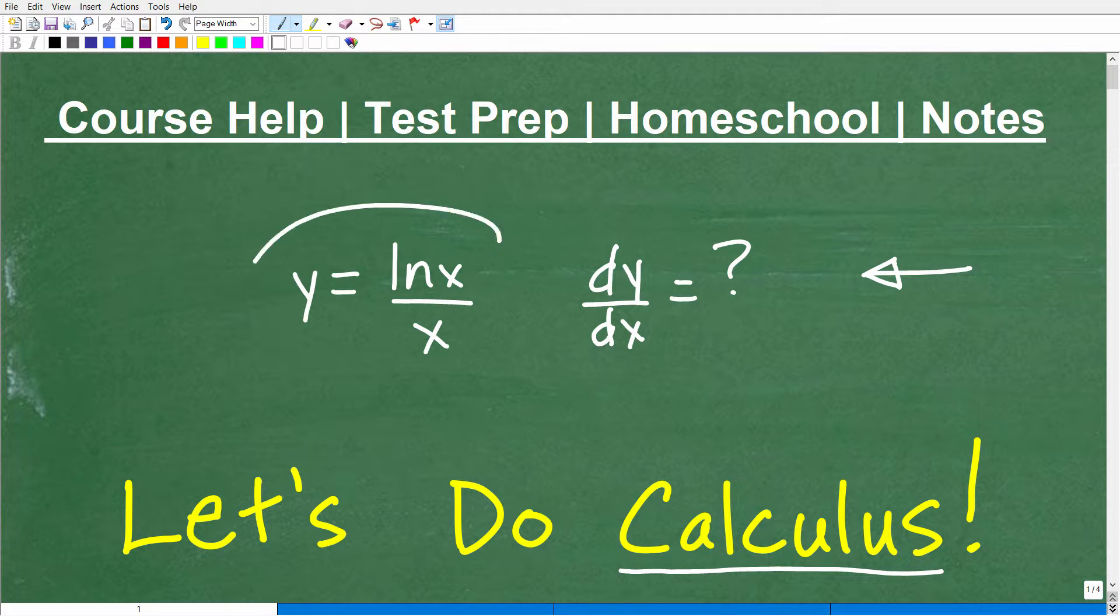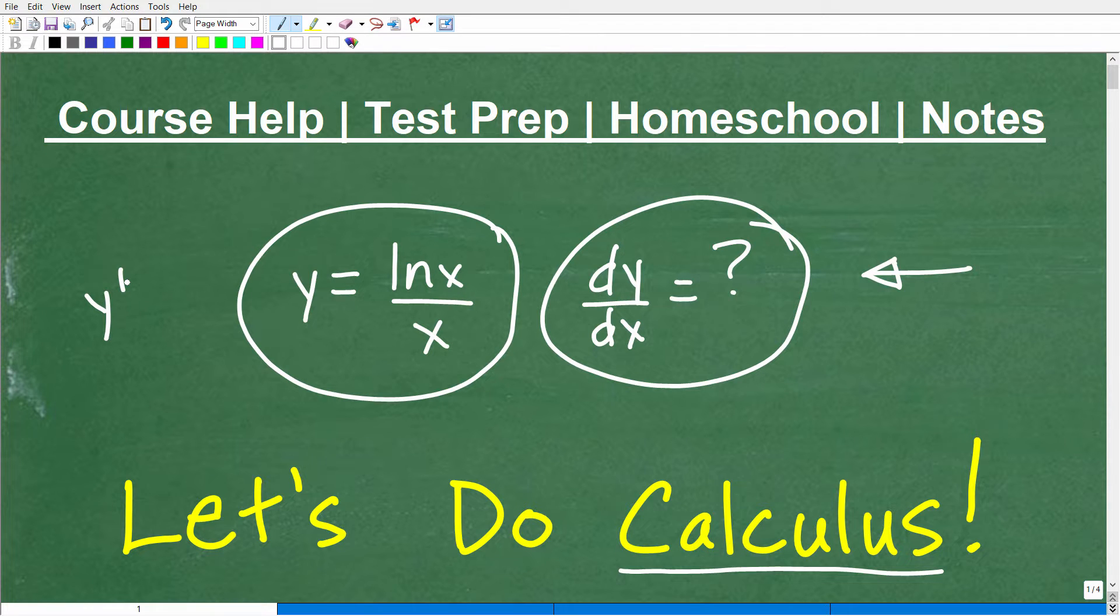But the problem here is that we have a function. We have this equation here, y equals ln(x) over x, and we want to find the first derivative. Another way to write this problem is we have y is equal to ln(x) over x. We want to find y prime, which is the first derivative.